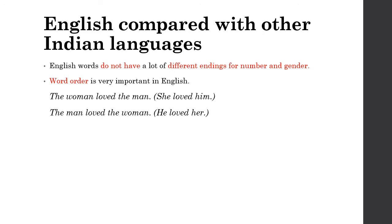The second important thing is the word order in English. In English, the word order of a sentence is subject, verb, and object (if there is any); otherwise, it's subject followed by verb. For example, 'the woman loved the man' means she loved him. But if we rearrange the words and write 'the man loved the woman,' the whole meaning changes — it means he loved her. So in the first case it was she who loved him, and in the second case it is he who loved her. Word order is one of the important aspects to be checked by an ESL learner.